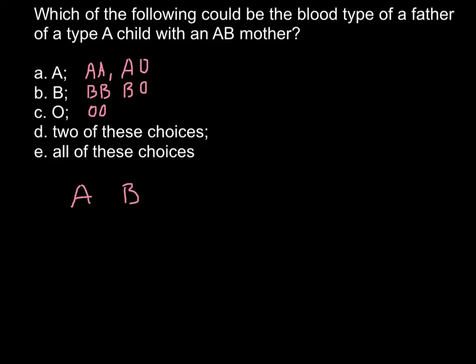And we know that the child belongs to blood group A. So is it possible that this genotype here would produce such a child with this phenotype?